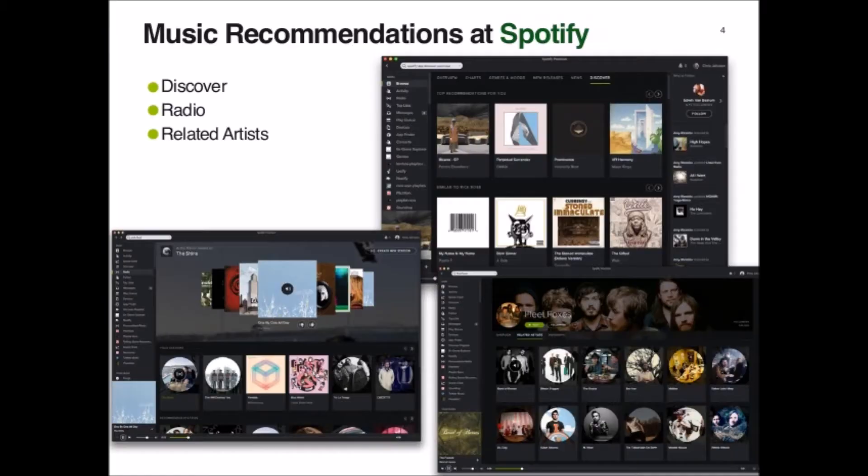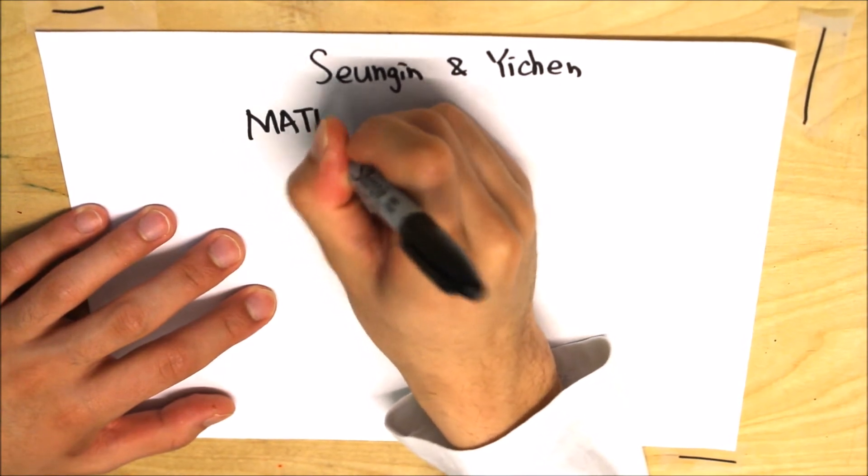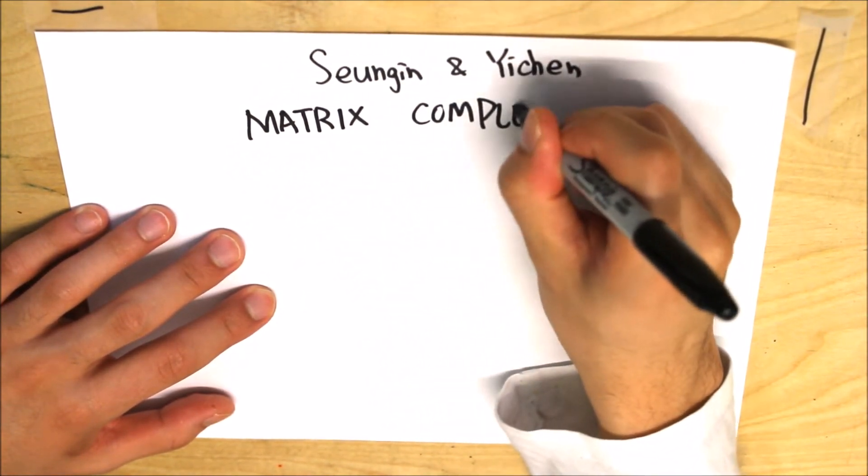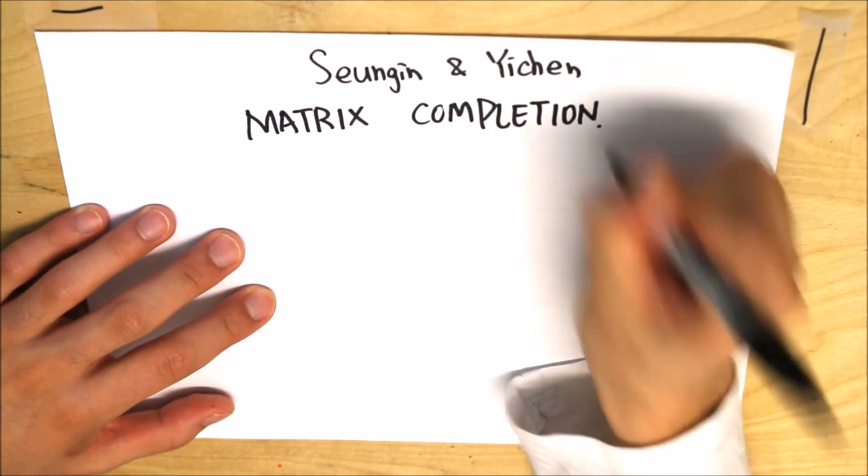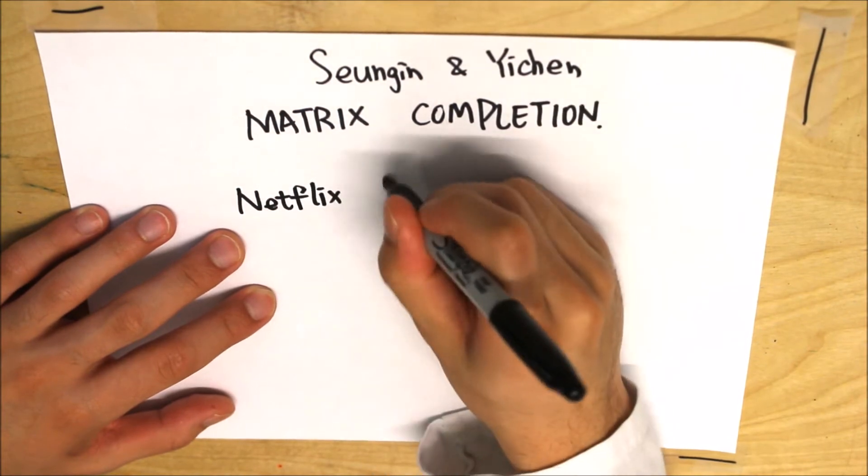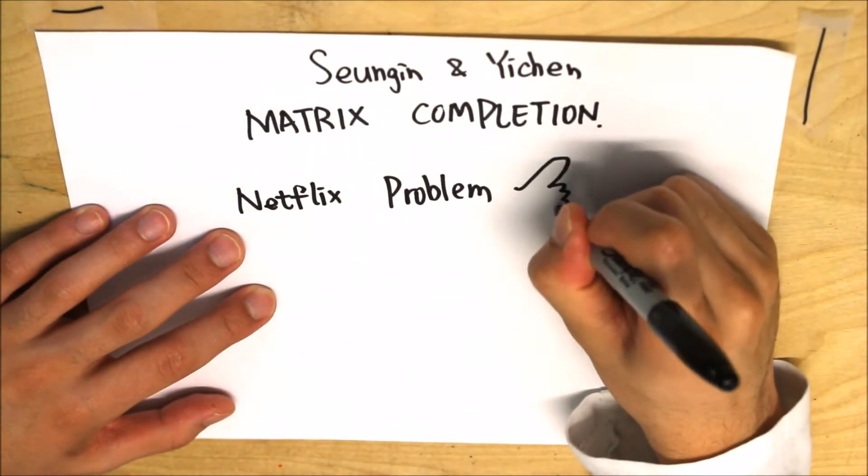Have you ever got a recommendation from Spotify or Netflix? And surprisingly enough, you ended up liking their recommendations and suggestions very much. How did this happen? Today, we are going to talk about the magic of matrix completion. You will find out that this magic is nothing more than an exciting linear algebra problem.